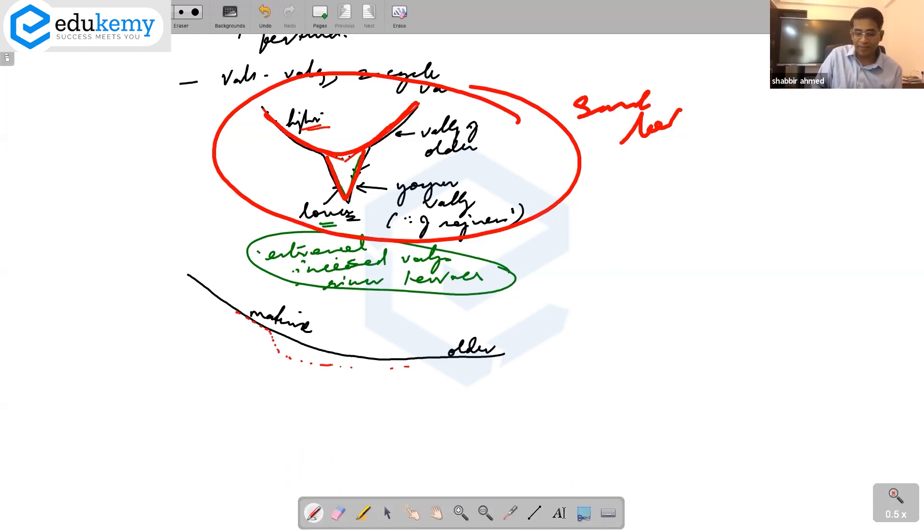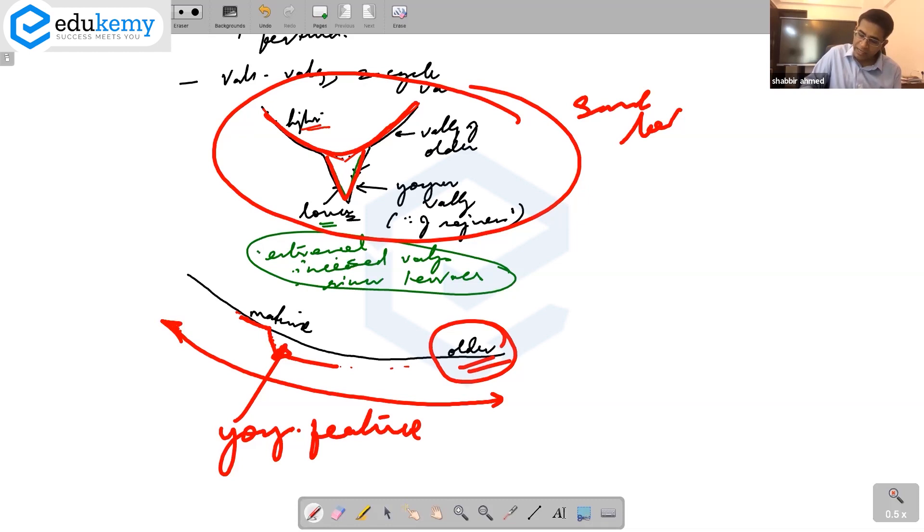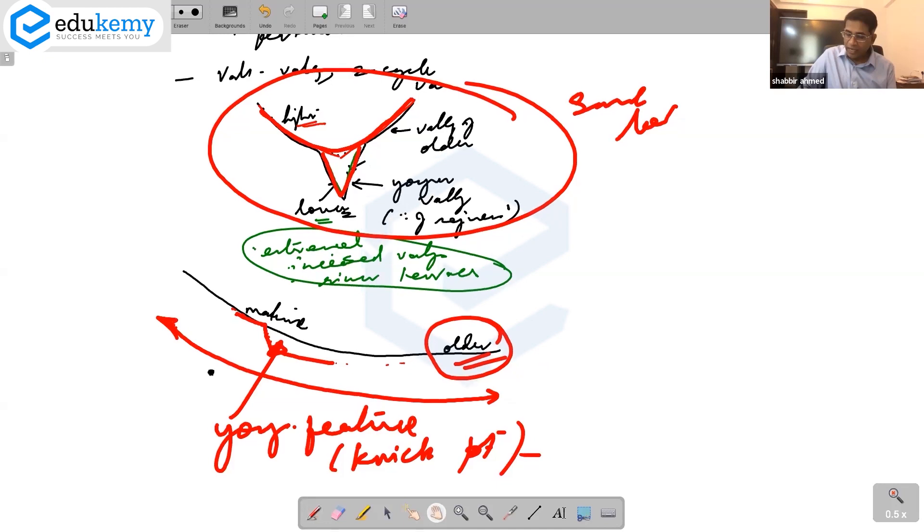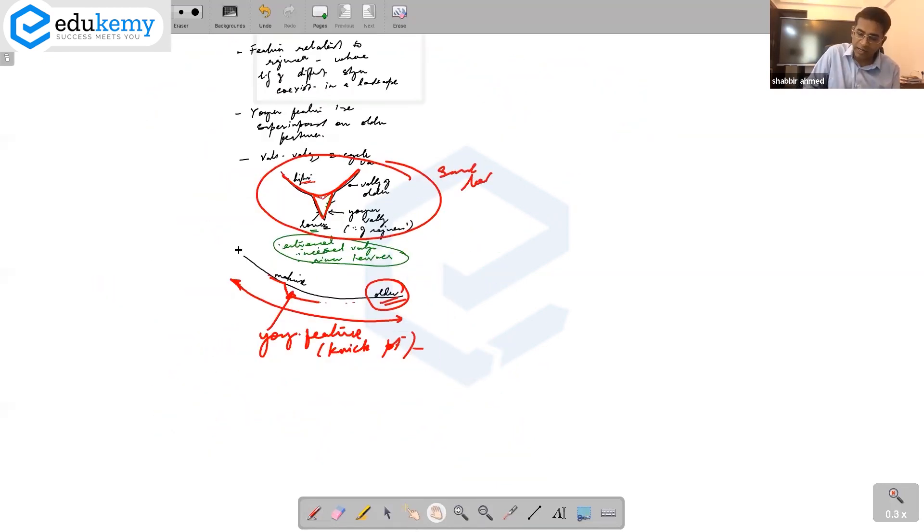But if I am comparing across thalweg, this is the older feature and further above in the height. This is the younger feature. And this is the nick point, a youthful feature. I can talk about topographic discordance in these two ways.